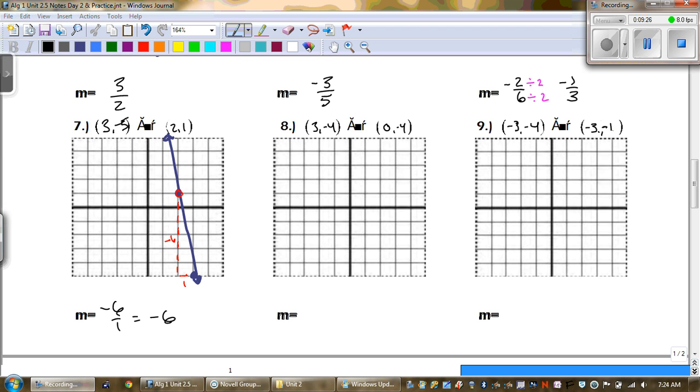And there you go. You're going down 6 over 1, which reduces to negative 6. Alright, two more. Let's do this real quick.